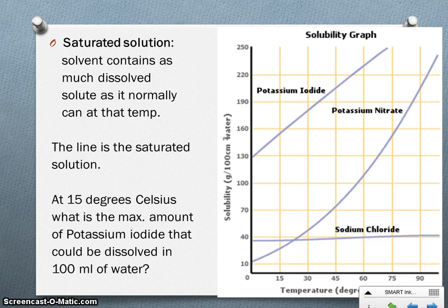If we look at this example: at 15 degrees Celsius, what is the maximum amount of potassium iodide that could be dissolved in 100 milliliters of water? We find 15 degrees Celsius, which is here. We're doing potassium iodide, which is this line up here. We follow that 15 degrees Celsius up, and how much can we dissolve max? Remember that this line represents a saturated solution, so we hit that line, we take a turn. It's just a little bit less than 160, maybe 155.